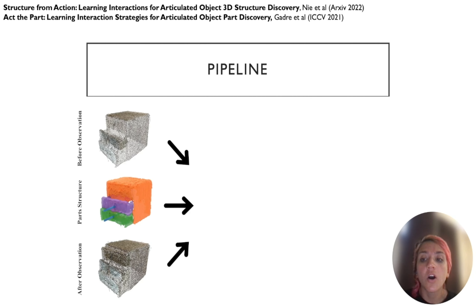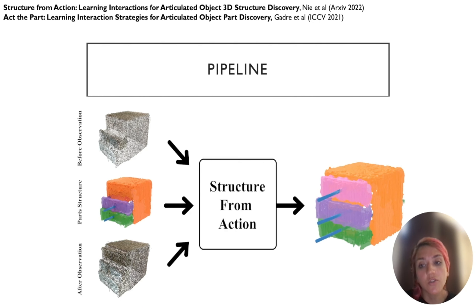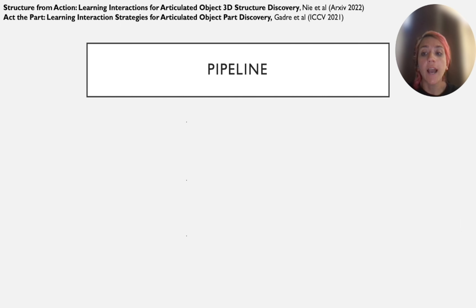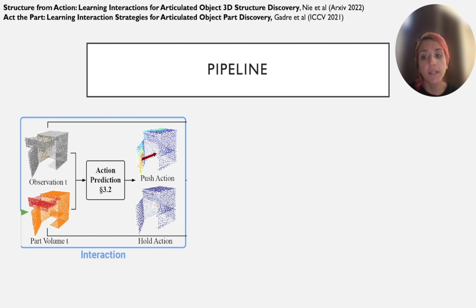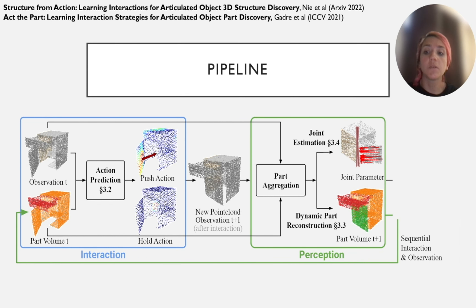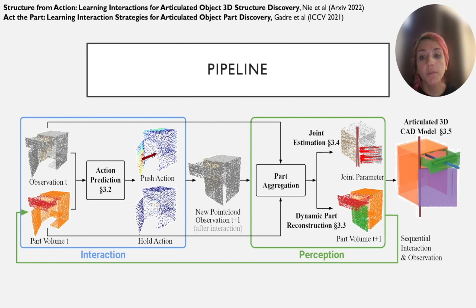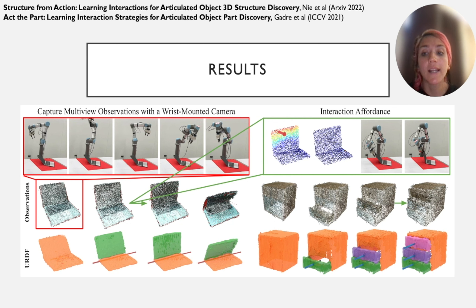Given a raw RGB point cloud, we infer and execute informative actions to construct the articulated CAD model, which includes the 3D part meshes and the joints. We have four components: an interaction policy that chooses informative actions that move the parts; a joint estimation module that predicts joint parameters and kinematic constraints of the articulation; a part aggregation module that tracks part discoveries in a sequence of interactions; and finally, the pipeline for constructing the articulated CAD model. Our results show that the model trained only in simulation can work well with real world objects as well.